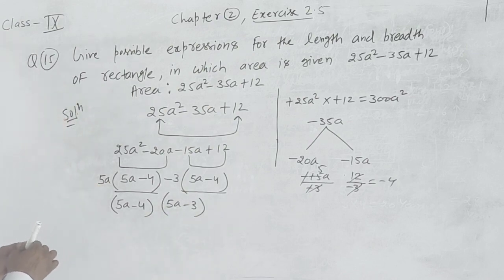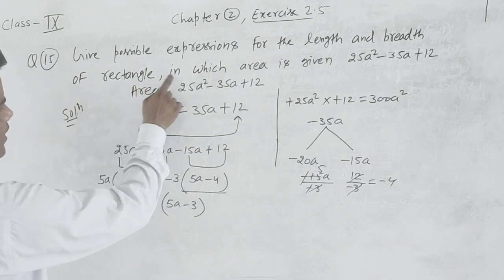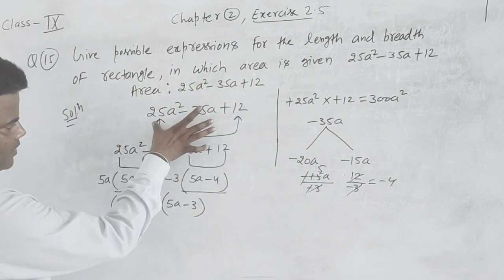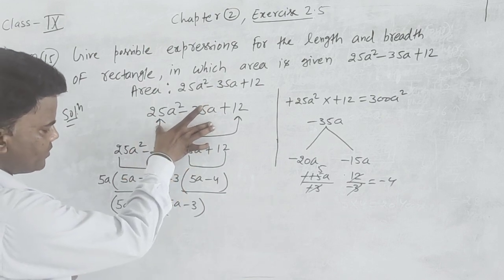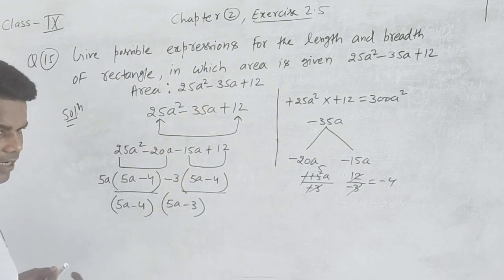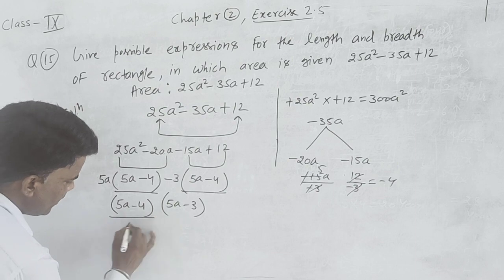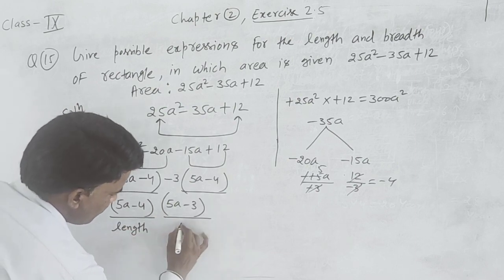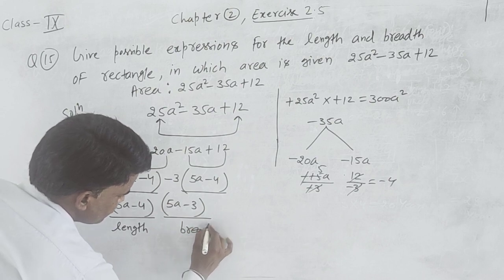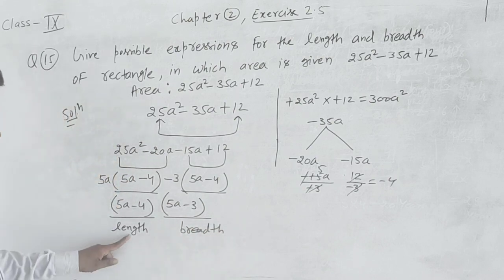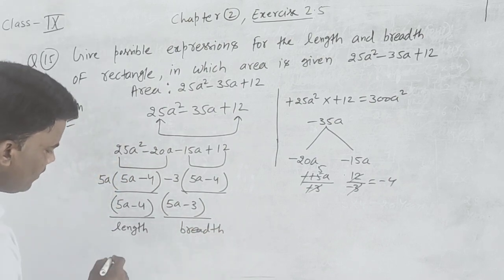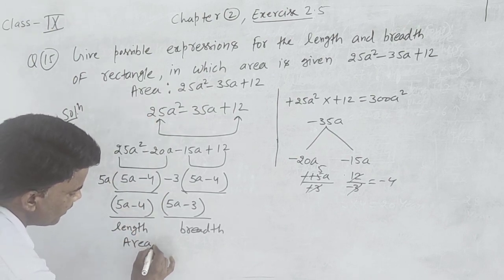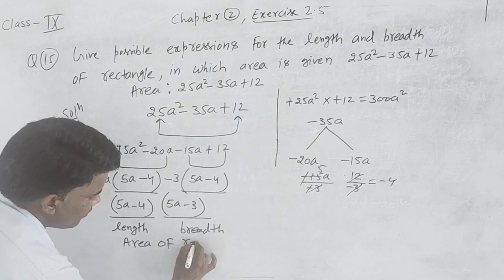Possible expression for the length and breadth of rectangle in which area is given. Area is given in quadratic equation form with two factors. One is length and the other is breadth. Area of rectangle formula is length into breadth.